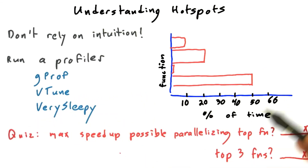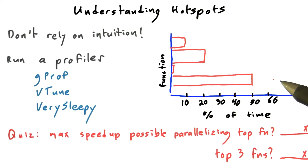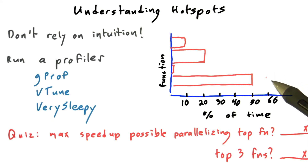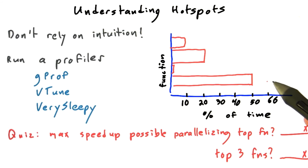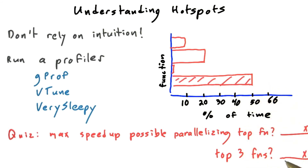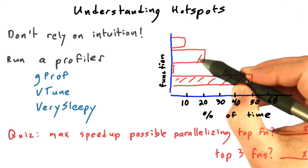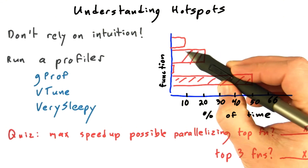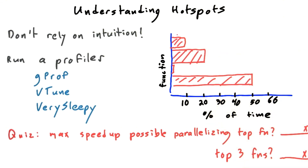Let's drive that home with a quiz. In this example shown here, the question is: what is the maximum speedup possible if you parallelized the top function — the function which takes the most time? And then, what if you parallelized the top three functions?